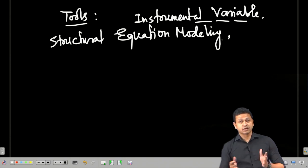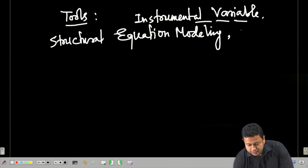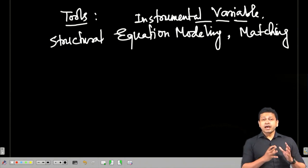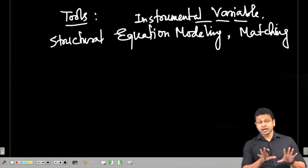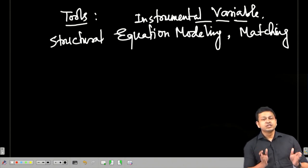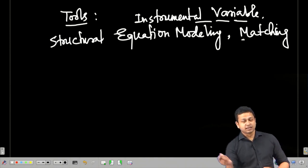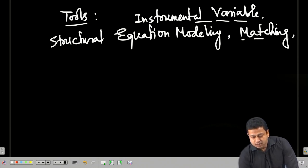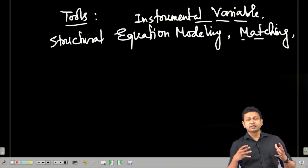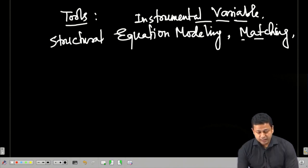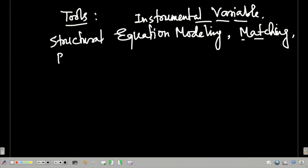We will talk about causality in terms of what is actually leading to y. Then we will discuss matching, where we try to match observations that are very close and look similar — comparing two groups under almost equal conditions to see the impact of some intervention at different time points. We can also use regression discontinuity design and difference-in-differences. These are basically two different tools and techniques that we will be using.